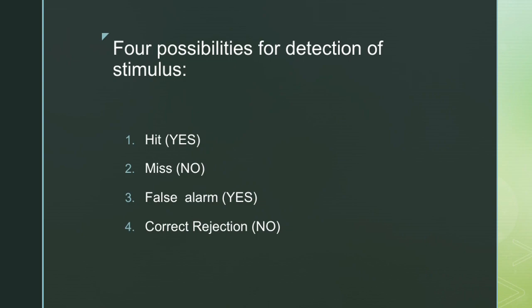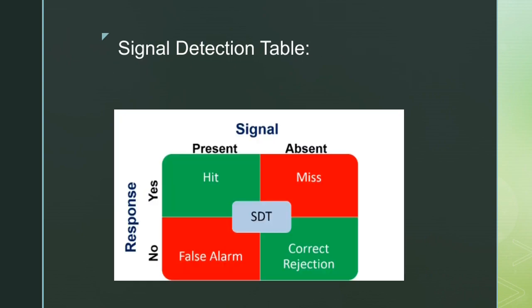In false alarm, the person hasn't detected the proper stimulus but says yes, claiming to have detected it — so his response is not true. In correct rejection, the person tells the truth: if he hasn't detected any stimulus, he will say no. In hit, if he truly detected the stimulus, he says yes. In miss, he has detected the stimulus but lies, saying he hasn't. In false alarm, he hasn't detected the stimulus but lies, saying yes. Here you can see the signal detection table showing hit, miss, false alarm, and correct rejection. The green tables indicate people telling the truth, and the red tables indicate not telling the truth.